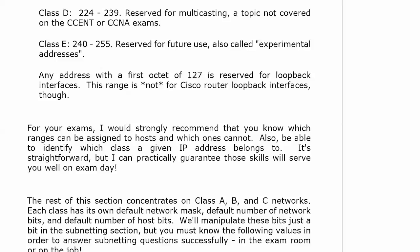Any address with a first octet of 127 is reserved for loopback interfaces — but not for loopback interfaces on Cisco routers or switches. Loopback interfaces are logical interfaces that do not physically exist on your router or switch. There are many reasons to create them in production networks. A great benefit for home labs or rack rentals is that you can create more networks for lab work than you have physical interfaces — with three physical interfaces you can only create three networks, but with loopbacks you can create just about as many as you want.